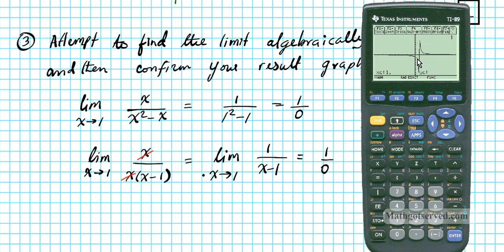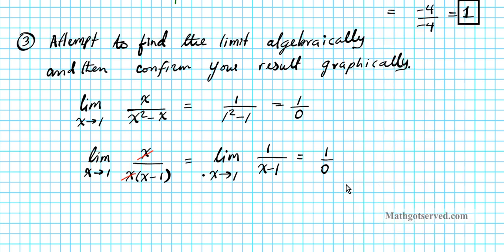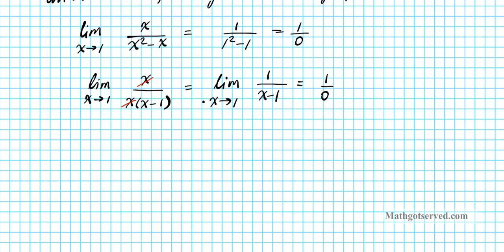Approaching 1 from the left, you have negative infinity. Approaching 1 from the right, you have positive infinity. So the limit does not exist in this case because you are approaching different values. Let's make a sketch of the situation and state our result. This is what the graph looks like — it's just a sketch.